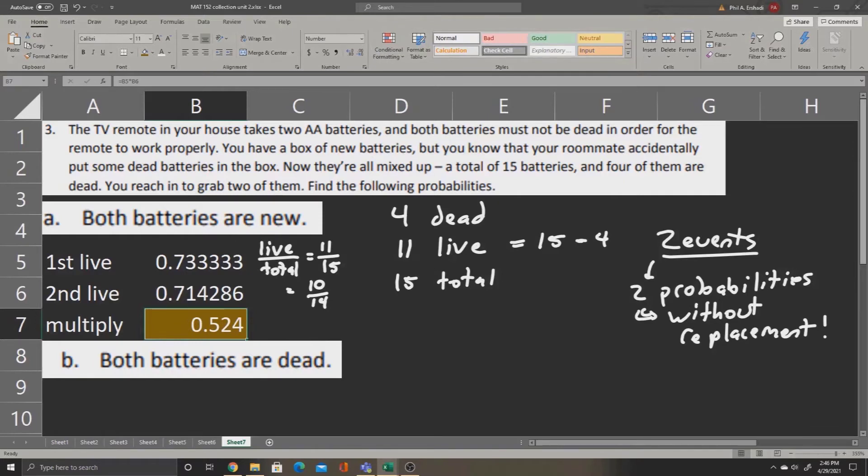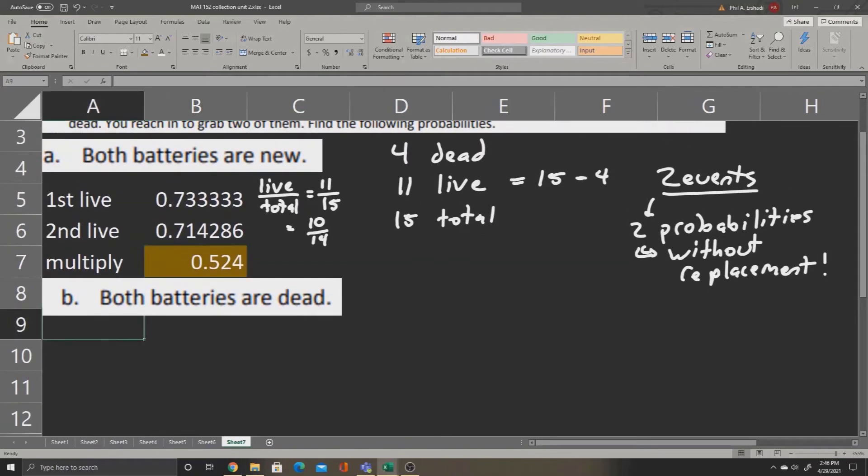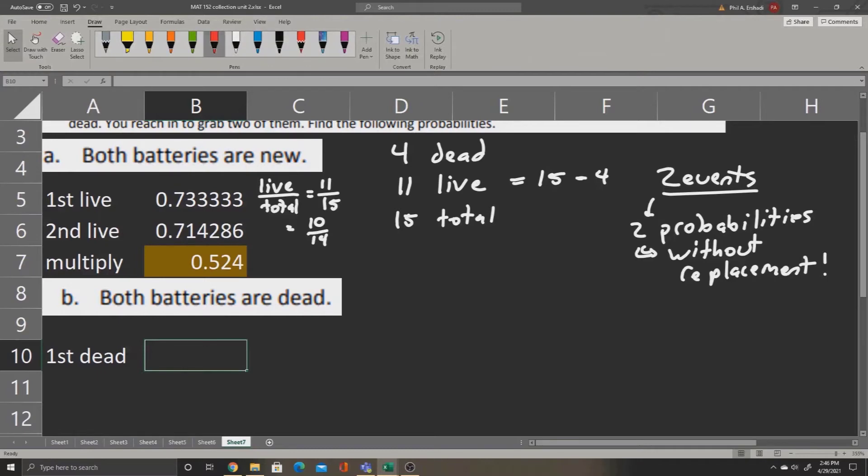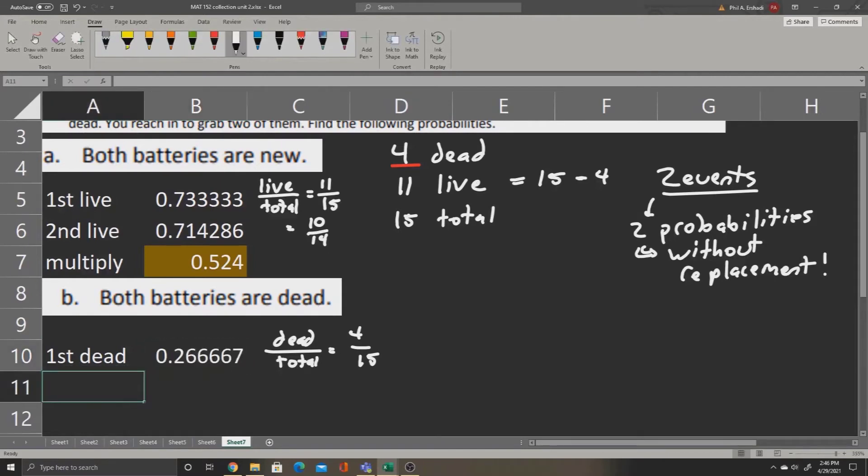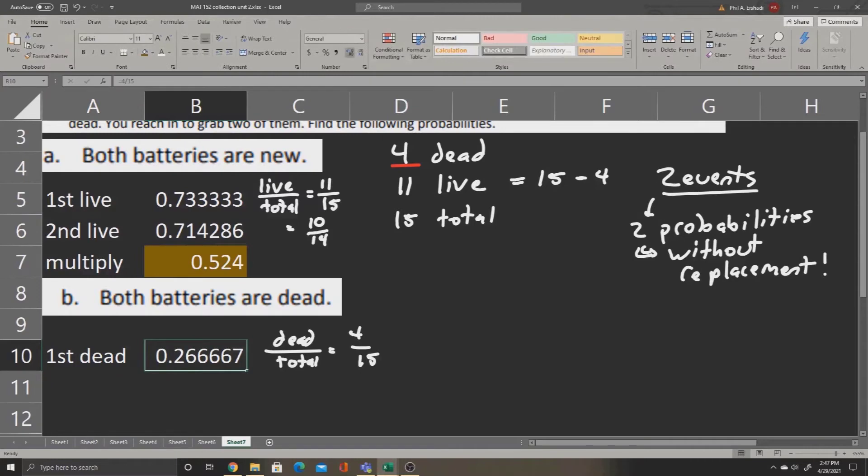We can do the same thing to find the probability of both batteries being dead. So let's find the probability of having the first dead battery. Now we have a total of four batteries in the pile that are dead. So we'll say our dead batteries are four. But to find the probability, we divide by the total. Now we're going to reset the count from last time, and we're going to have 15 total batteries again. We're not going to use our results from part A to carry over to part B. We'll still say there are 15 batteries total. We'll say equals 4 divided by 15, giving us this probability. We'll reduce decimal a few times as well.